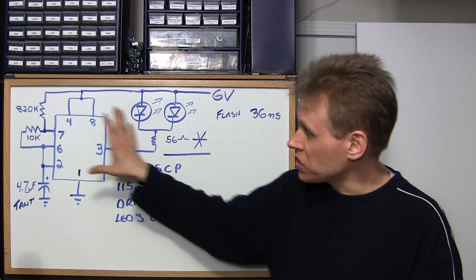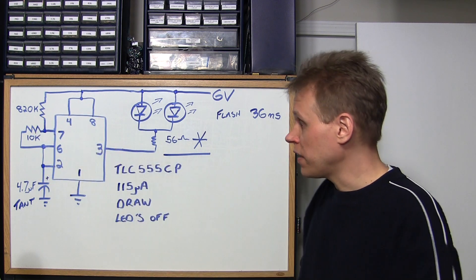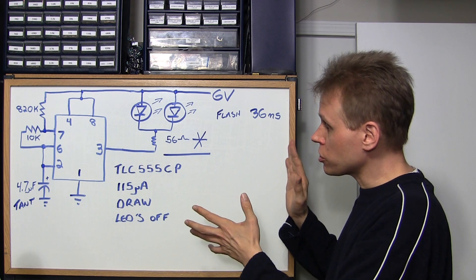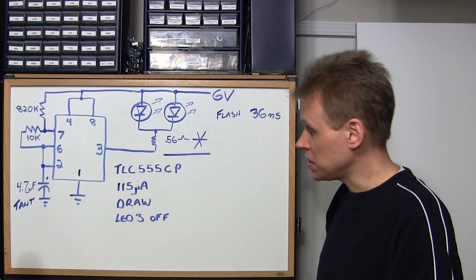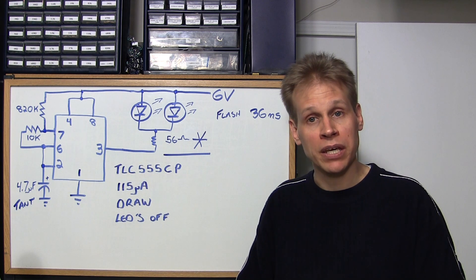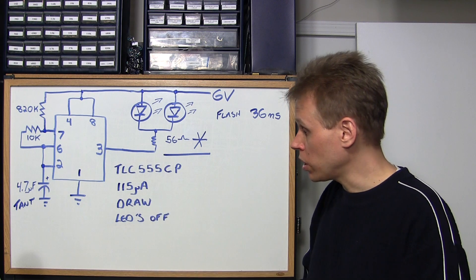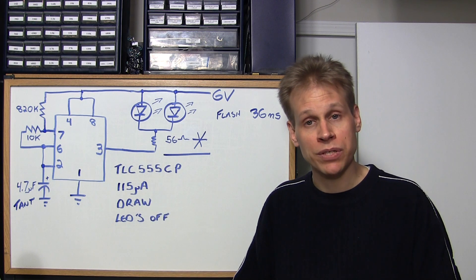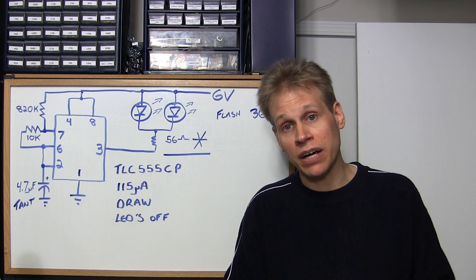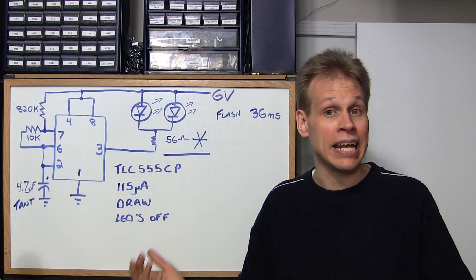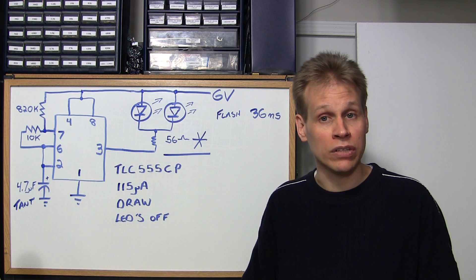So I'll start with this side of the schematic here with the 555 timer. If you're going to build this circuit I strongly suggest you use the TLC 555 CP, reason being between flashes it only draws 115 microamps versus a regular 555 timer like say an SA555 or equivalent would draw about 1.5 milliamps or higher and that's a huge difference.